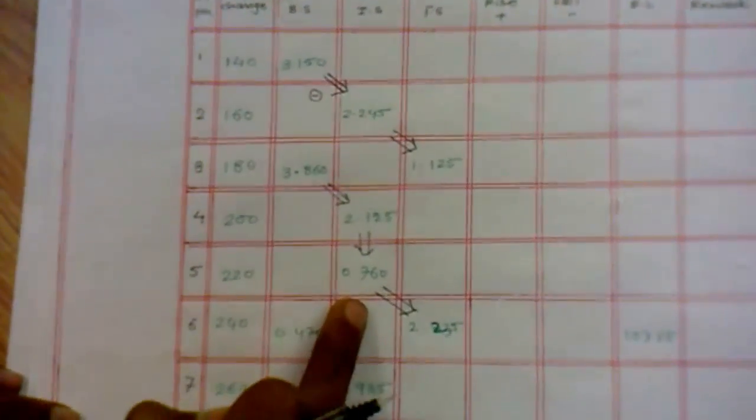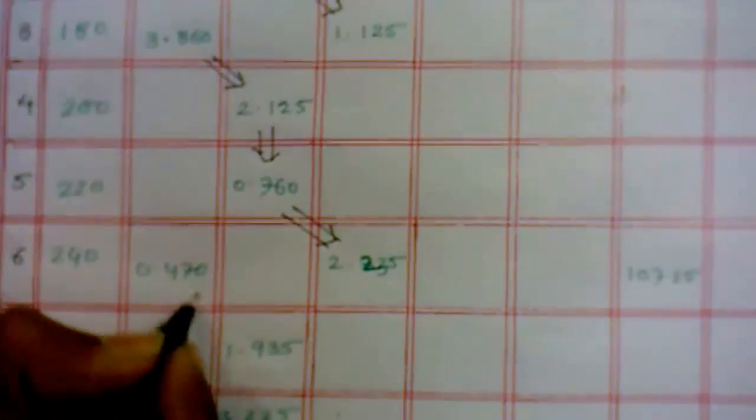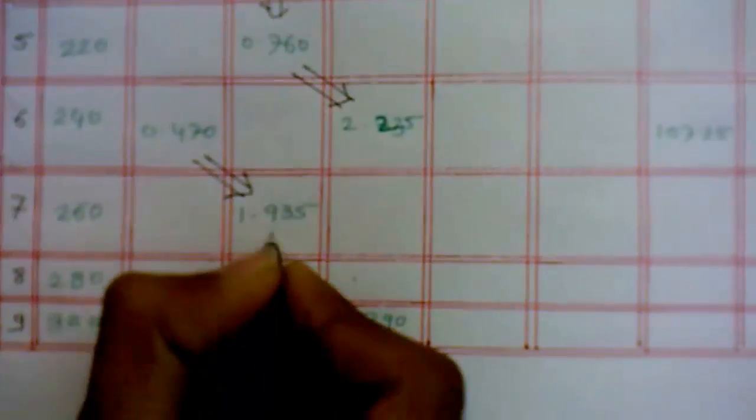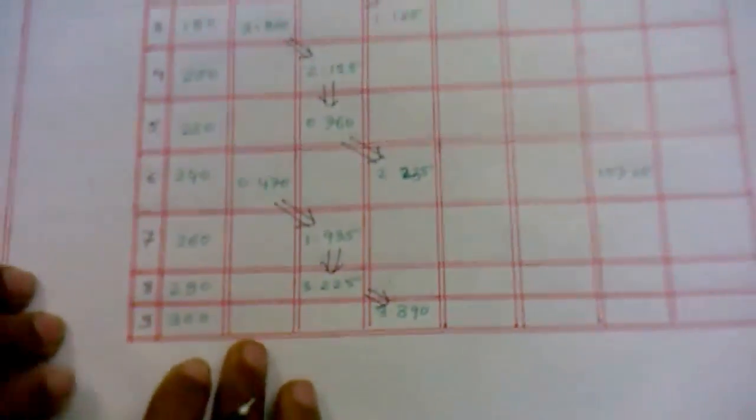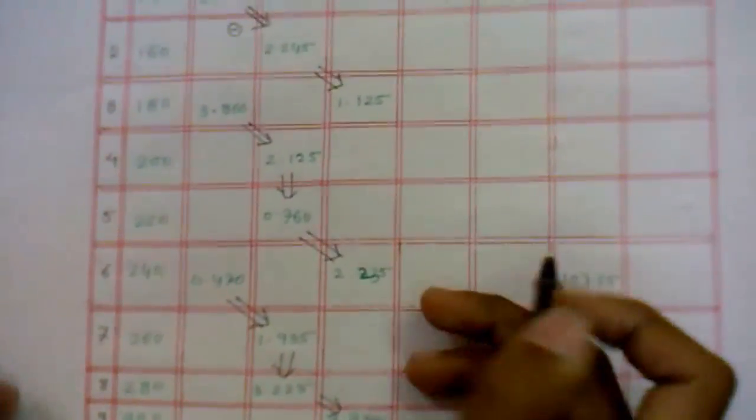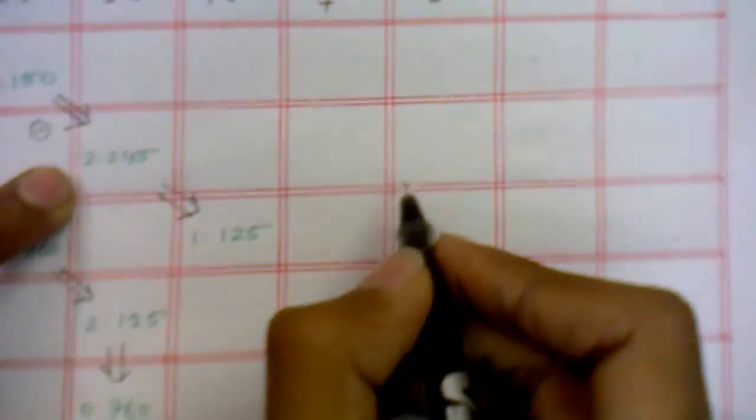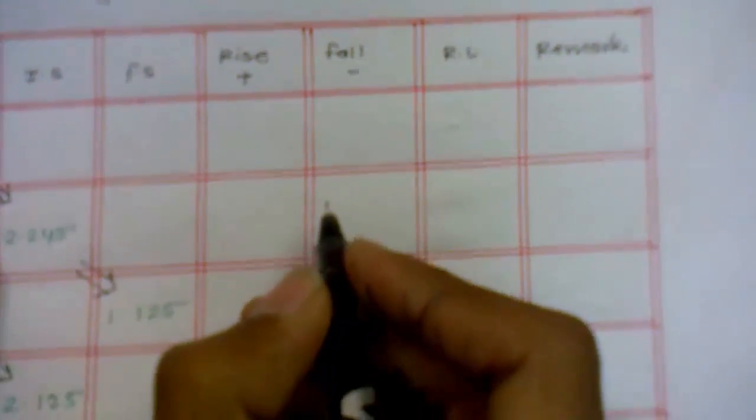Do this calculation, we are getting another value. Similarly, here also we are getting another value. It is a sequence - with the help of sequence we are getting some values. Such that 3.150 minus 2.245, we are getting the value 0.905.